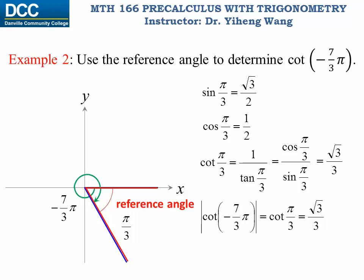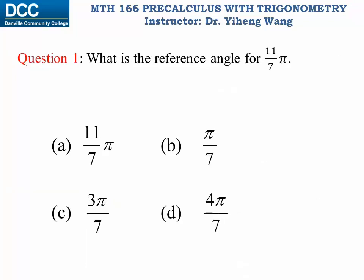We only need to determine if we need to add the negative sign or not. Since the terminal side is in the fourth quadrant, the tangent and cotangent values are both negative, so we do need to add the negative sign. Therefore cotangent(−7π/3) equals negative √3/3. This completes the problem. Thank you.